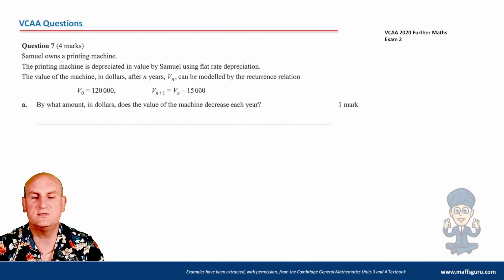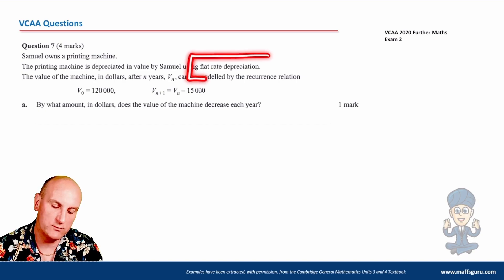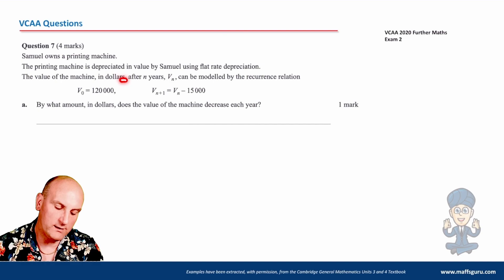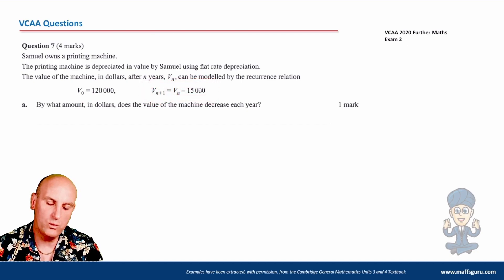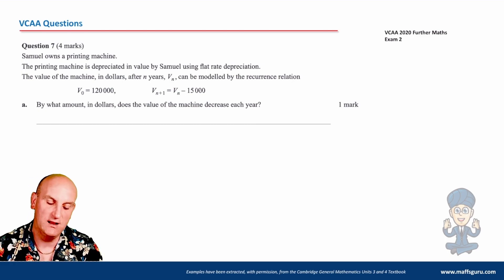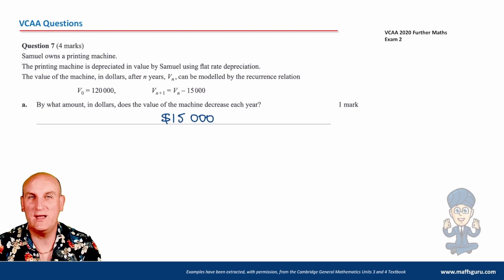Here are some VCE exam questions. Sam owns a printing machine depreciated using flat rate depreciation. The value after n years is given by V0 = 120,000, V(n+1) = V(n) − 15,000. By what amount does the machine decrease each year? That's simply $15,000 — a nice easy mark. They do get harder than this for VCE, I promise.